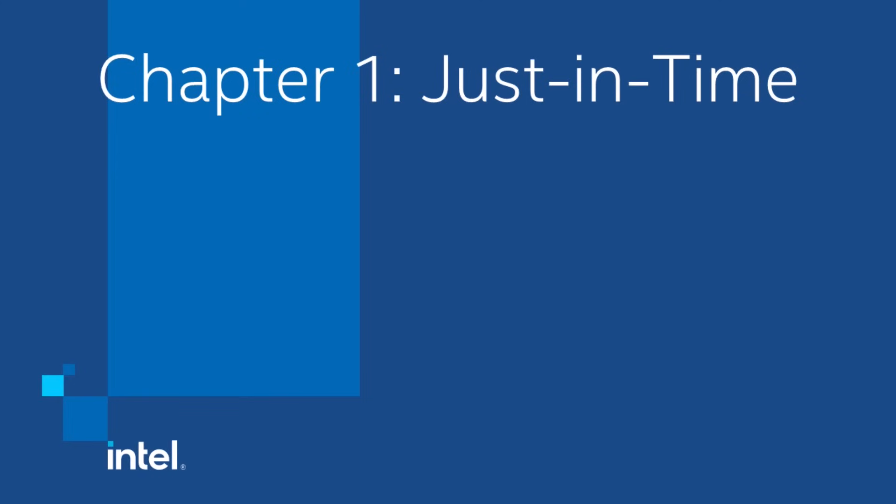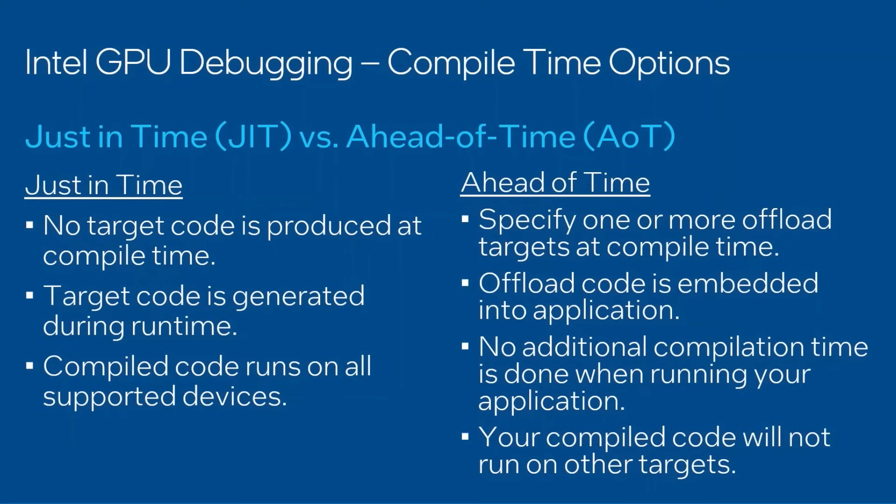First, we have just-in-time compilation. Here, no target code is produced at compile time of your host application, but the offline compiler is invoked for your GPU regions each time you run the application.